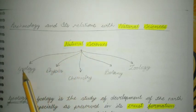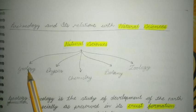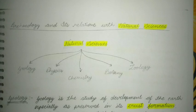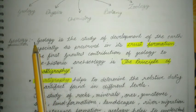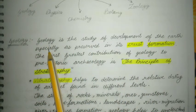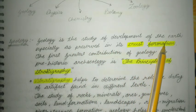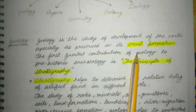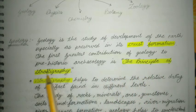Natural sciences include geology, physics, chemistry, and botany. Now we will talk about geology. Geology is the study of the earth, especially as preserved in its crust formation. The first greatest contribution of geology to prehistoric archaeology is the principle of stratigraphy.